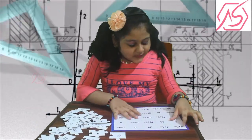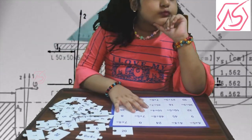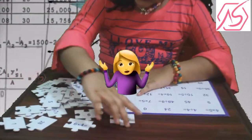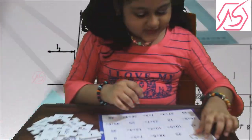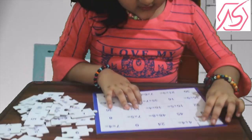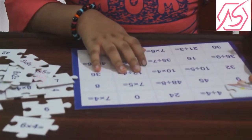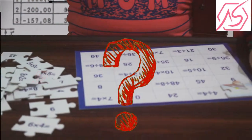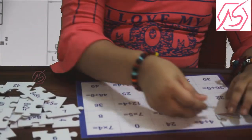So four times five is 20. So what could 20 be? And 20 — four divided by four. 20 divided by 4 is... 24 — here is one.